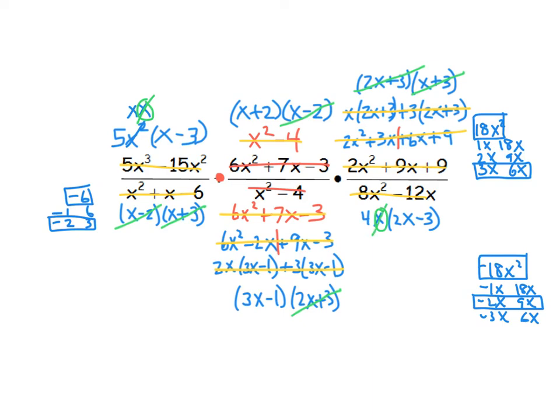At this point, we can write our final answer. In the numerator, we have 5, x, x - 3, and x + 2. We'll write that right here: 5x(x - 3)(x + 2).